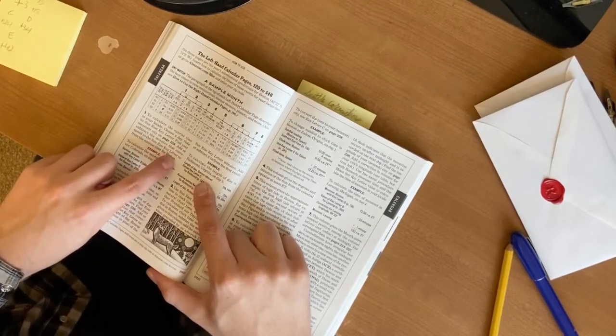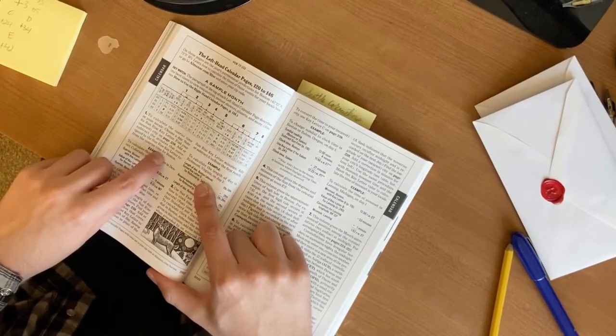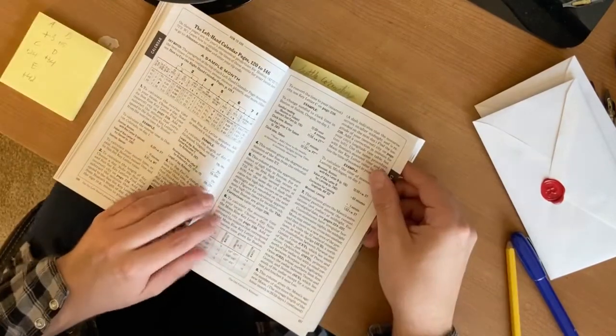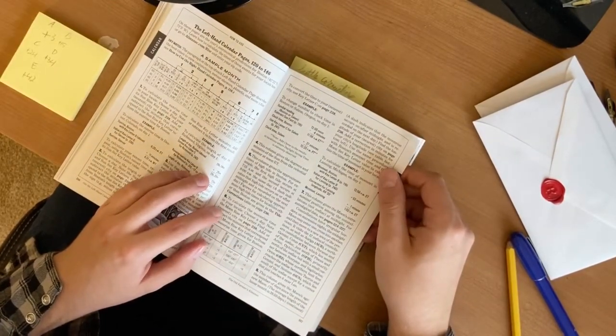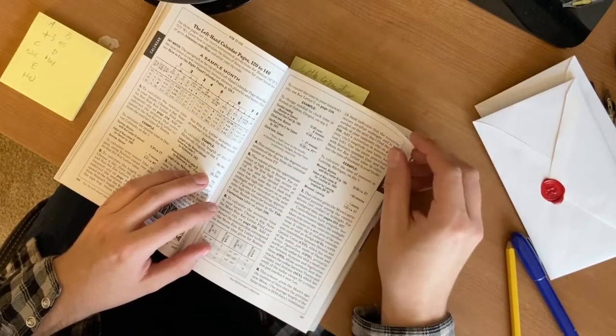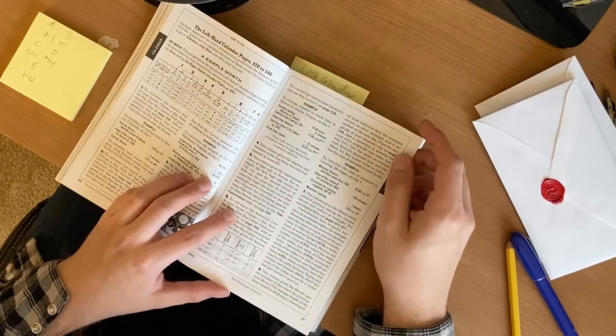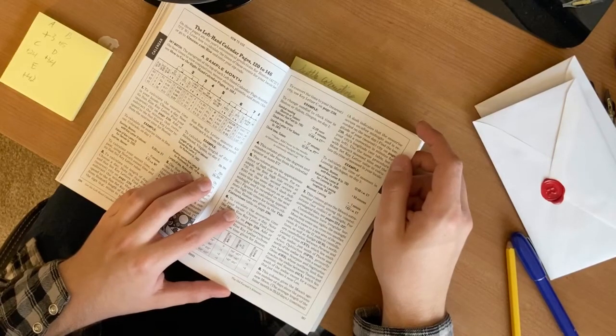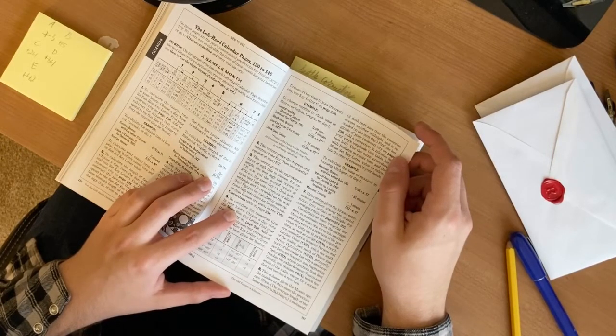Calculate the moonrise time in your locale: choose a day, note the moonrise key letter, find your nearest city, which we are done, add or subtract. A dash indicates that the moonrise occurs on or after midnight and is recorded on the next day. Okay, fair enough.